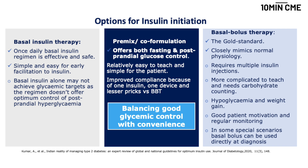A convenient option between basal-only and basal-bolus is a pre-mixed formulation, where both the rapid-acting component and basal insulin are available in the same syringe. This can be as a pre-mixed formulation or a co-formulation. The advantage is fewer injections while still providing control of both fasting and post-prandial glucose. However, there can be some issues with hypoglycemia in some patients when the dose needs to be adjusted.